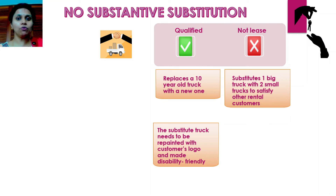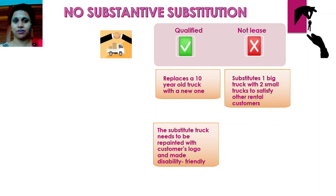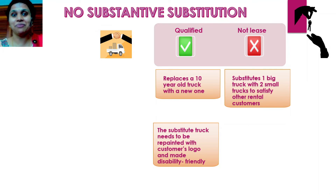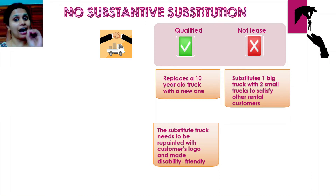When you assess a lease under this criterion, you may imagine different situations that could occur. But the standard says not to consider events that are highly unlikely to occur based on information available at the date of inception — for example, an alien invasion of Earth. The standard has actually given a few examples of events considered unlikely that you should not consider when assessing substantive substitution rights.